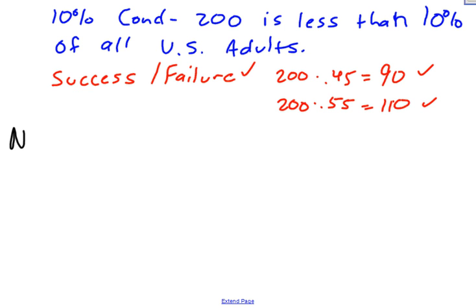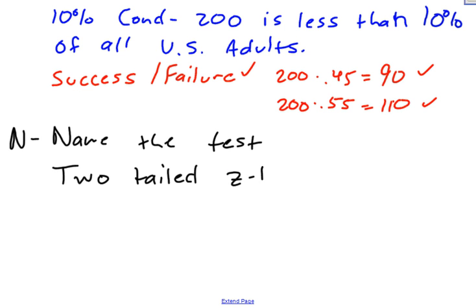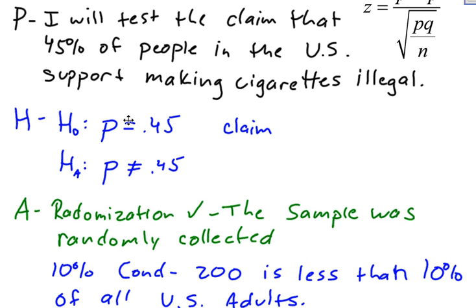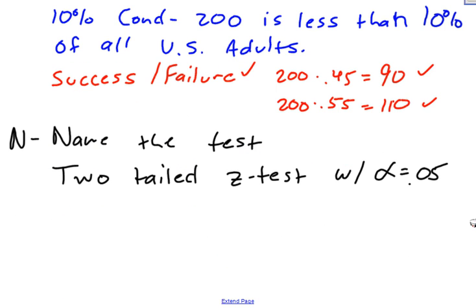Now that all conditions are satisfied, I move on to N in PHANTOMS — name the test. Since I'm dealing with proportions, this is a two-tailed z-test with alpha equal to 0.05. Alpha was given in the original problem. It's a two-tailed test because the null hypothesis says equal to. If the null had greater than or equal to, it would be left-tailed; if less than or equal to, right-tailed. It's a z-test because with proportions we always use a z-distribution or normal distribution.